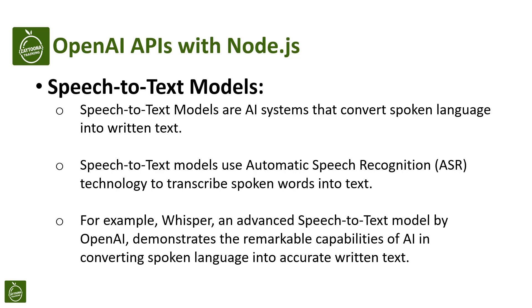Speech-to-text models are AI systems that convert spoken language into written text. They use automatic speech recognition technology to transcribe spoken words into text. For example, Whisper, an advanced speech-to-text model by OpenAI, demonstrates the remarkable capabilities of AI in converting spoken language into accurate written text.